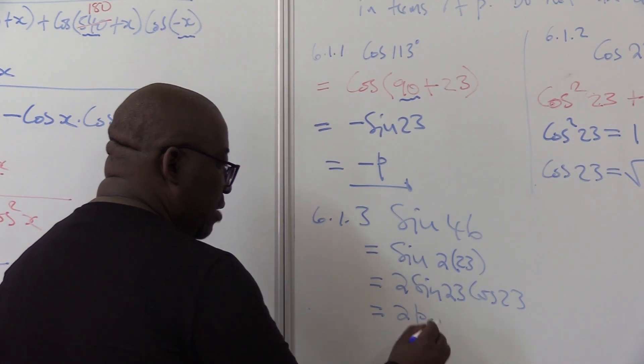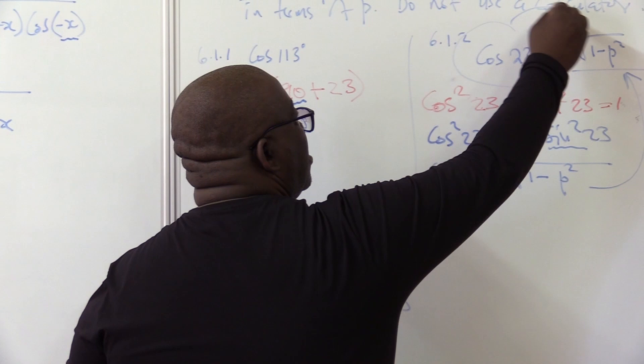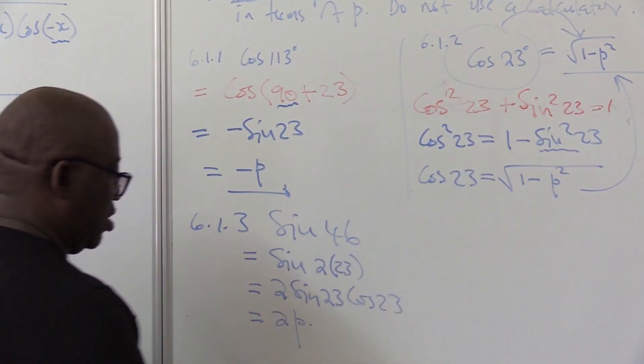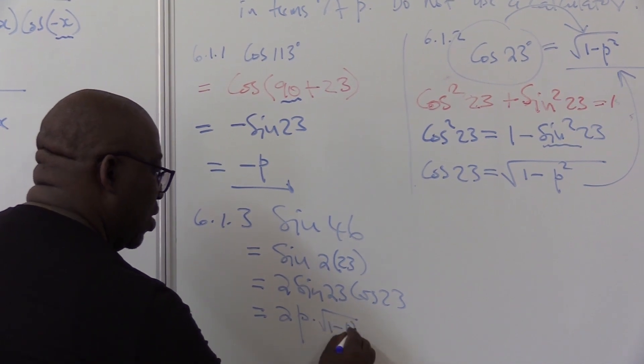I push in P times cos 23. I've just done cos 23, that is that. So that's all I substitute: square root of 1 minus P squared.